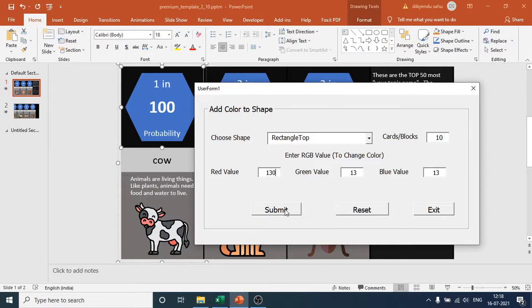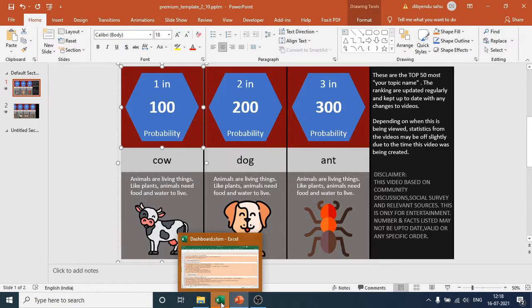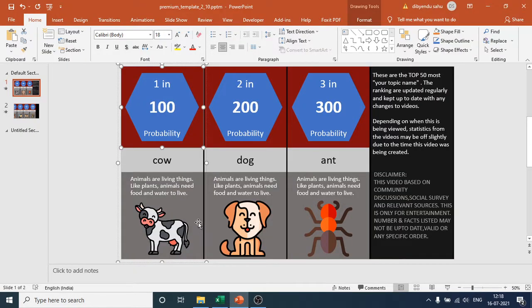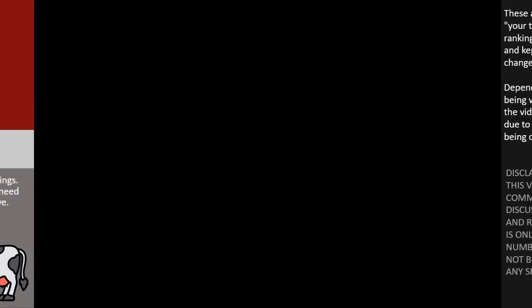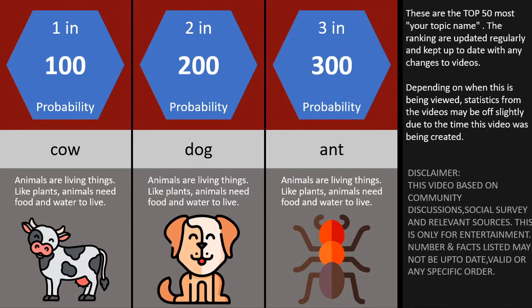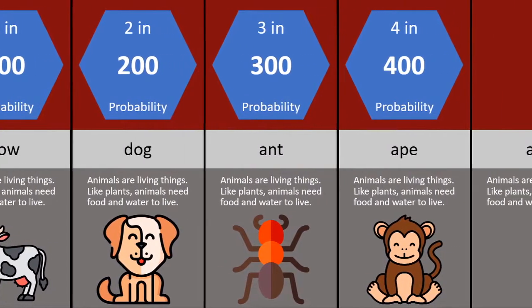Hit the submit button — 'Color changed successfully' — then click Exit. Now all the rectangular top shapes have turned into your chosen color. Run the presentation to see it — it has changed all the rectangular top colors. That's nice and simple.